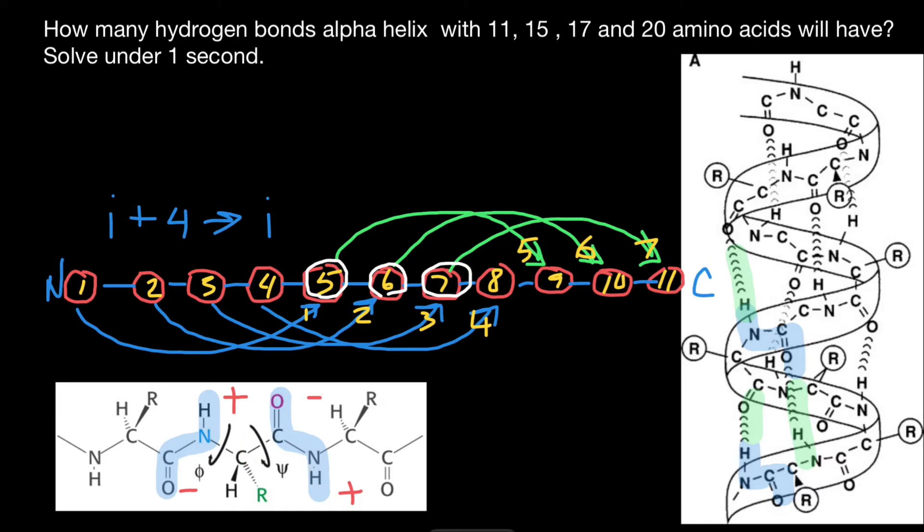So per each amino acid, we have two potential groups which will form hydrogen bonds, like you see, for example, here. And this amino acid also has an amino group and carboxylic group, which can also form two hydrogen bonds.